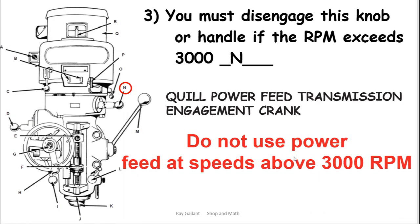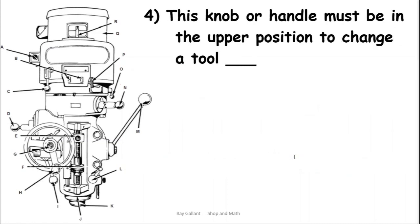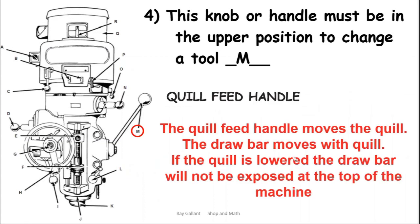This knob or handle must be in the upper position to change the tool. It's the quill. If the quill is down this thing shrinks into the machine, you won't even see it. So you need to push that handle back up. When you're first starting you might not realize the spindle's down two inches and some of these drawbars only stick out about three quarters, maybe a half, maybe an inch or two inches above. If you have this down you'll be like where is the nut, where is the wrench, I can't put a wrench on top.